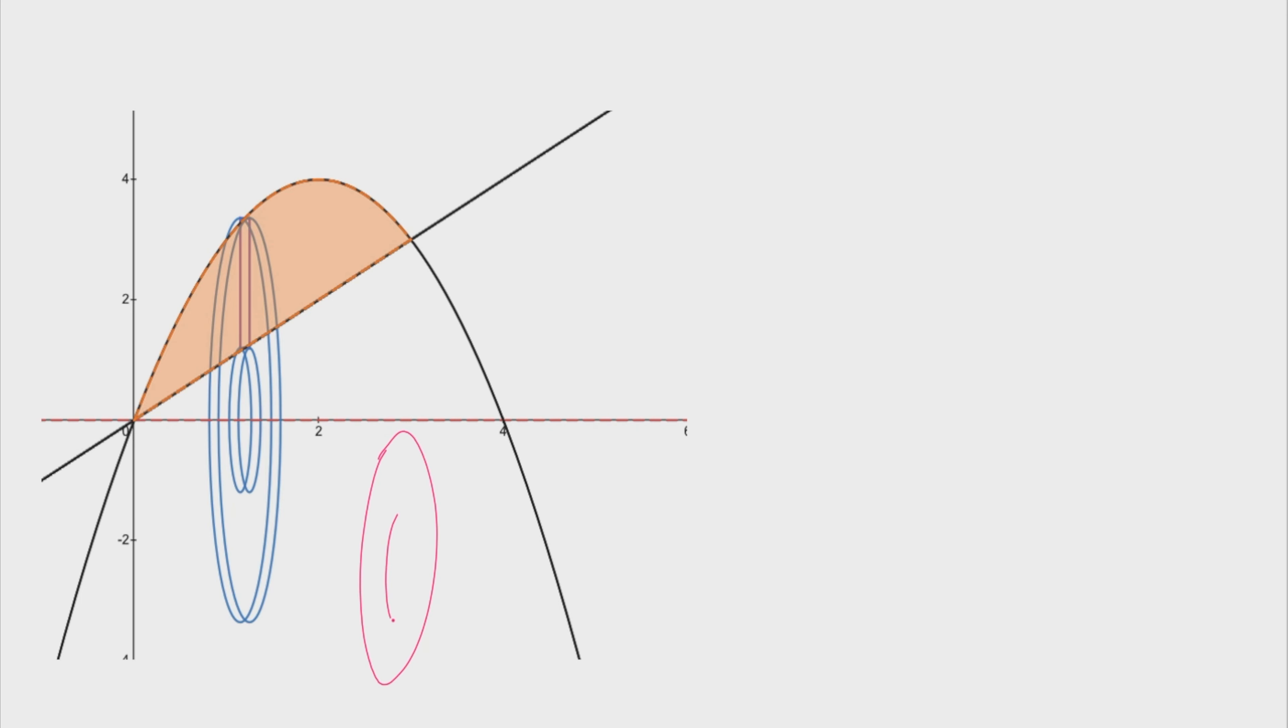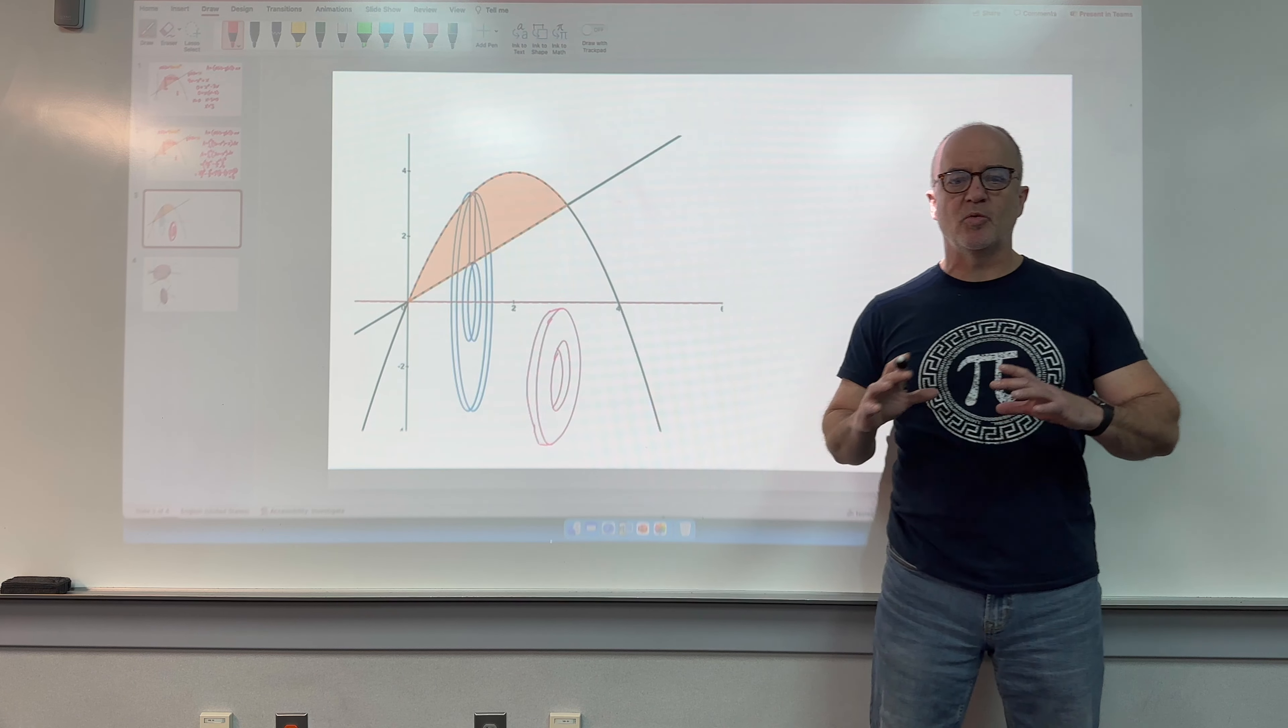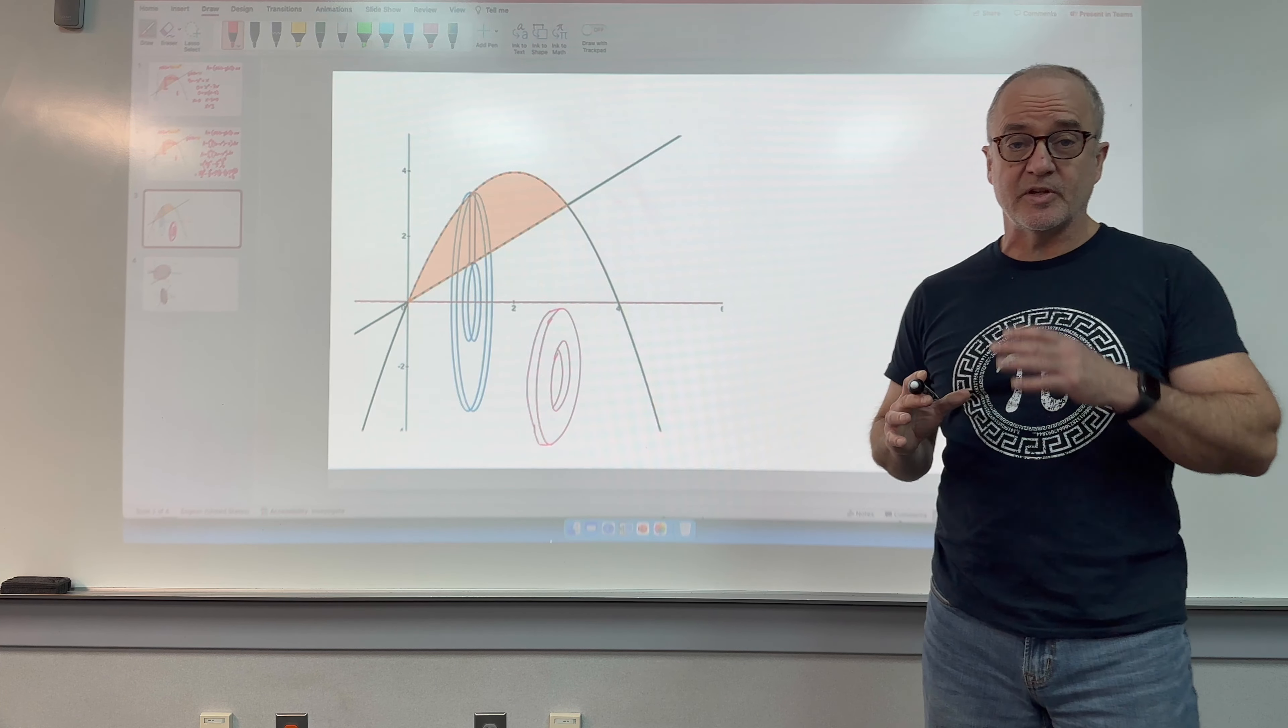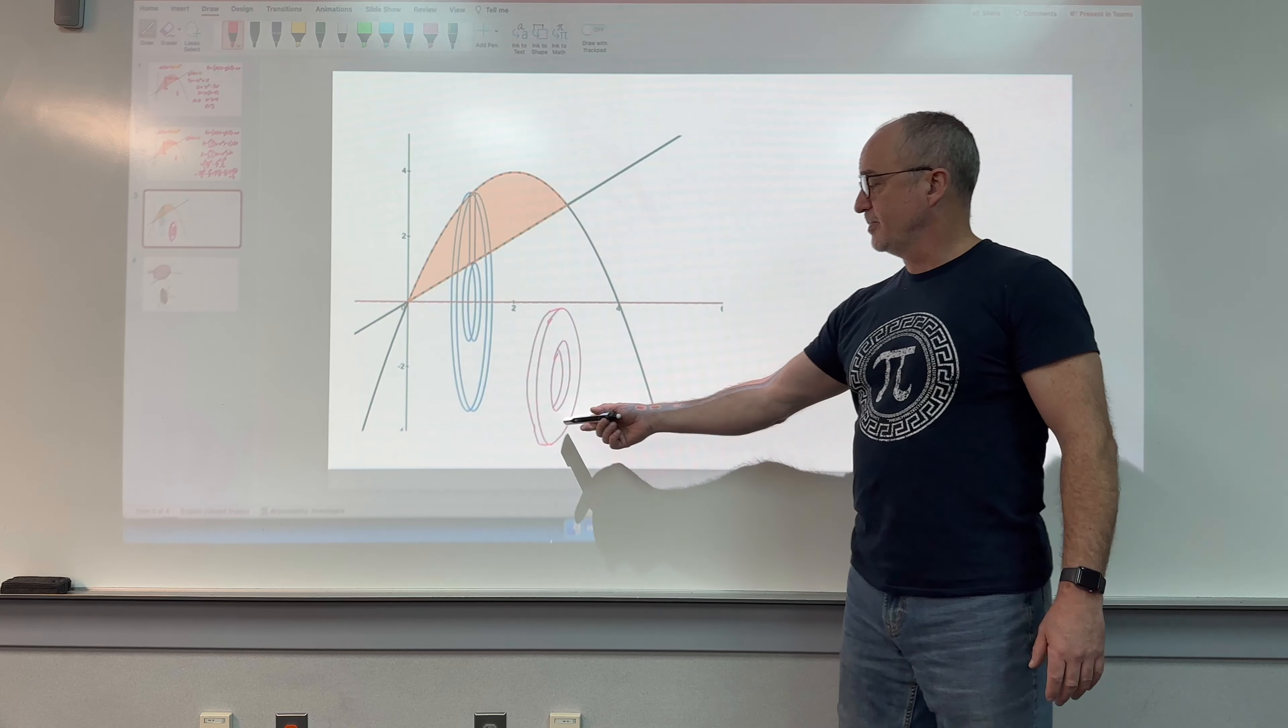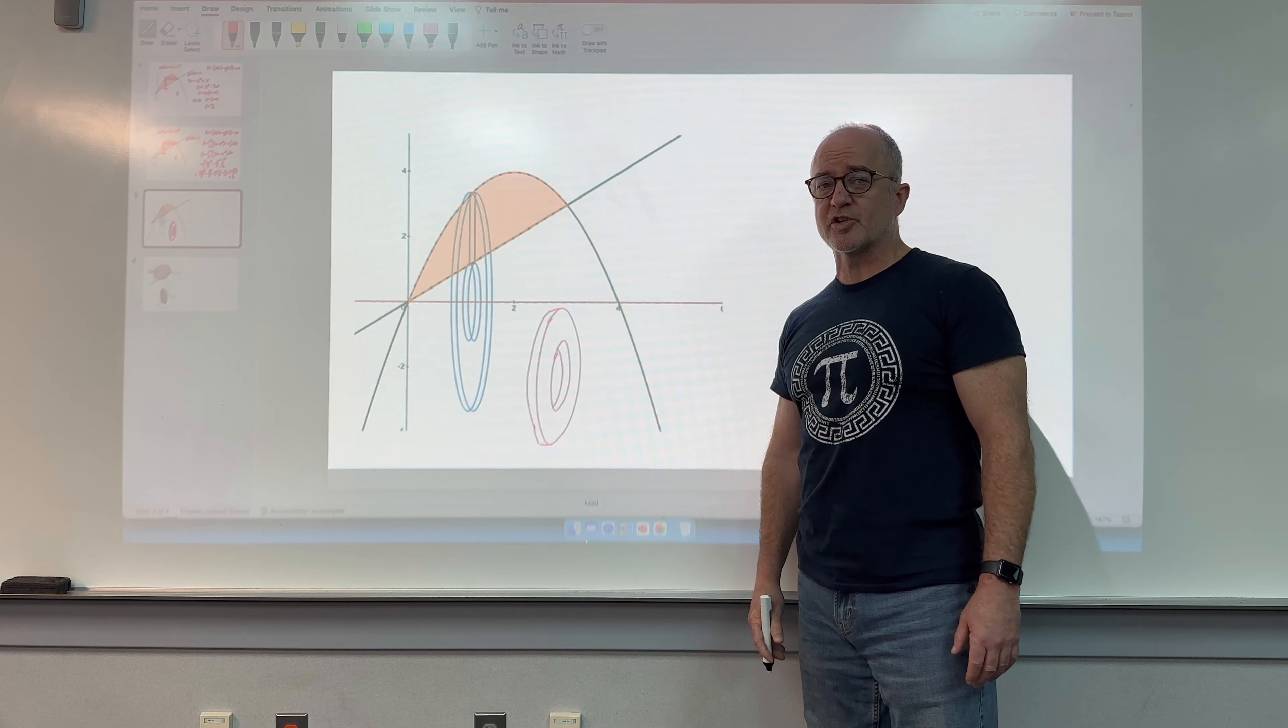But we are going to use something called the washer method where we are going to spin this Riemann rectangle around and we are going to get a cylinder just like the disk method. But that cylinder is going to have a hole in the middle. We've got a cylinder with a hole in it which is called a washer in a hardware store. This is called the washer method.